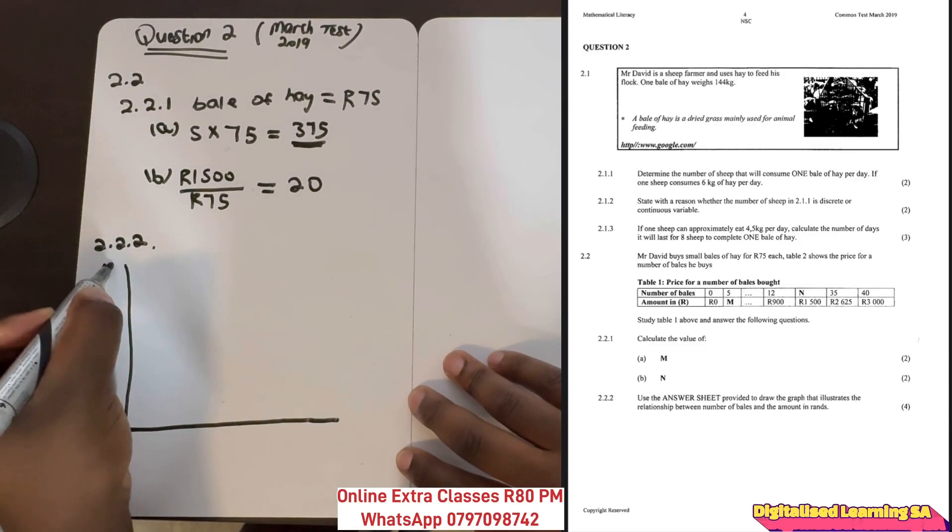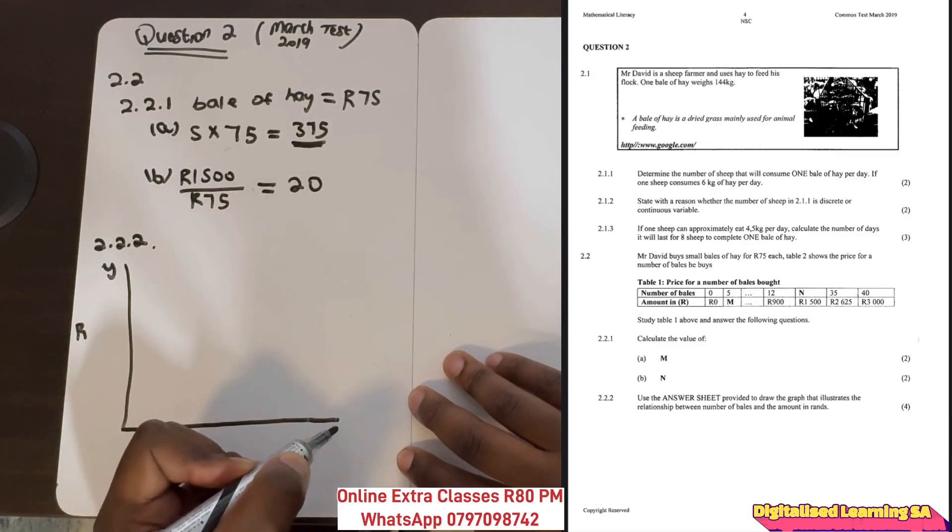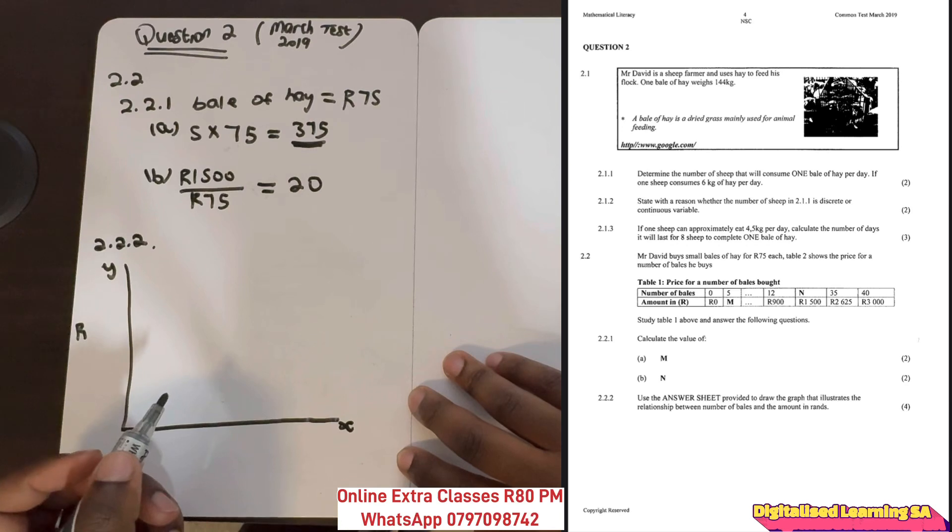This will be our y-axis, which will denote the amount in rent. And this will be our x-axis, which will denote the number of bales.